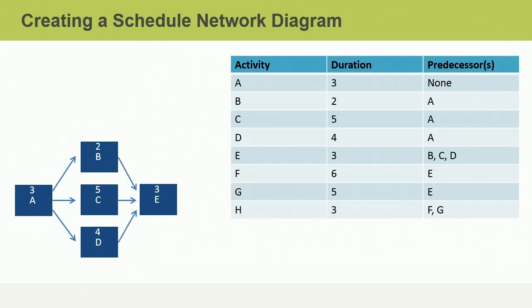Since activities B, C, and D are all predecessors to activity E, the paths merge together again. This is called convergence. What happens next? Feel free to pause the video at any time and resume when you're ready.